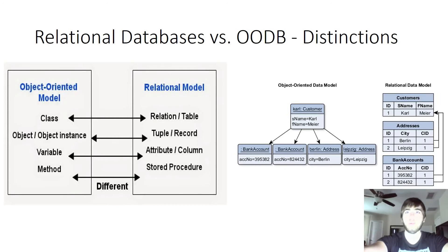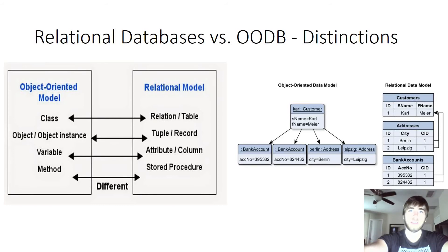In the relational database data model, you have a customer table which holds an ID, a first name, and a last name. Another table called addresses with an ID, a city name, and a customer ID. And another table called bank accounts, holding an ID, an account number, and a customer ID. Their respective customer ID columns have a relationship to the ID column in the customer table.